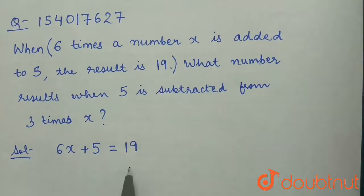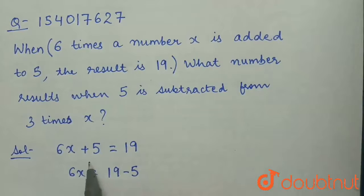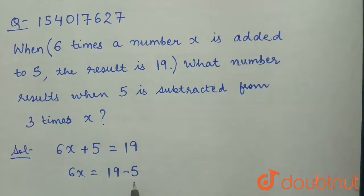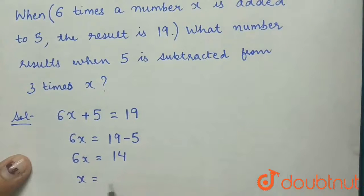Now to solve this, 6x is equal to 19 minus 5. 5 is being added here, so on transposing it to the right-hand side, it will get subtracted. 6x equals 14. So now the value of x will become 14 upon 6, that is 7 upon 3.